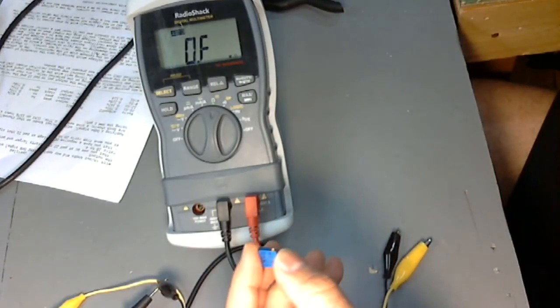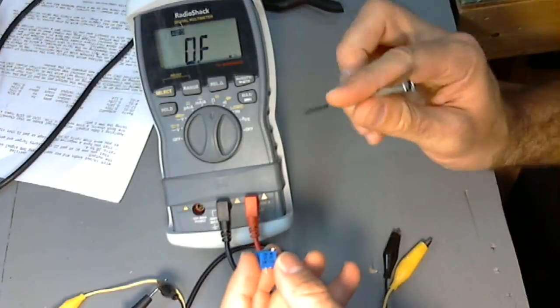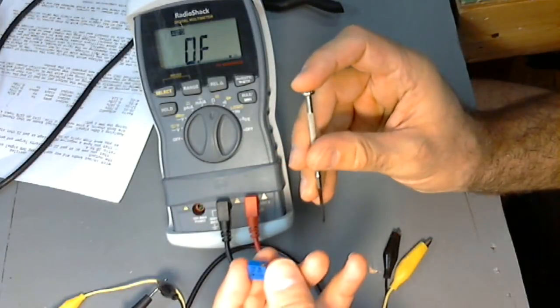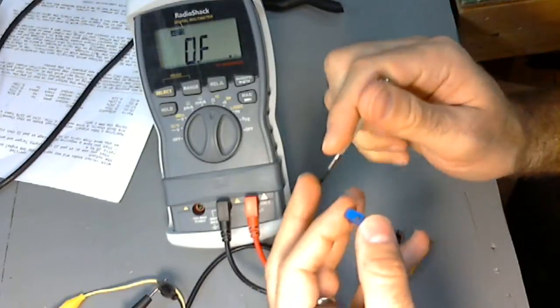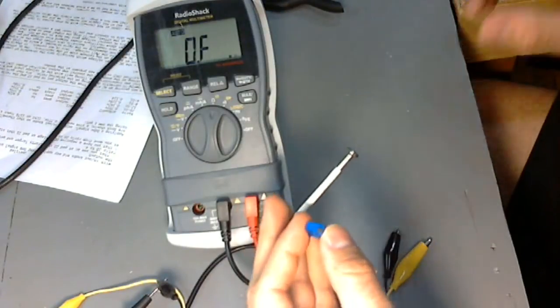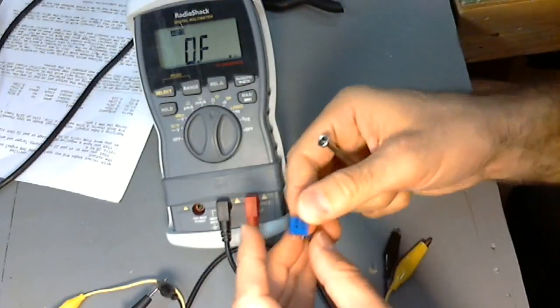The instructions for calibration for R59 while it's in circuit is to set it so that the maximum amount of signal is passing through.